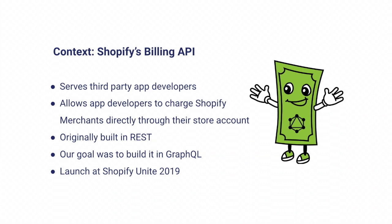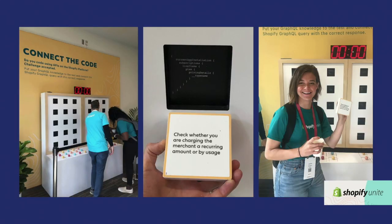Originally our goal was to launch at a Shopify event called Unite, and we did this by holding a workshop where we took our developers through the actual API and helped them get their hands dirty with the billing API. This was quite a stretch goal — we didn't realize just how hard it would be to build parity for this API. Our original goal was just to make the functionality available in GraphQL to increase adoption, because no one was really adopting GraphQL since they couldn't be in our app store without the billing component.